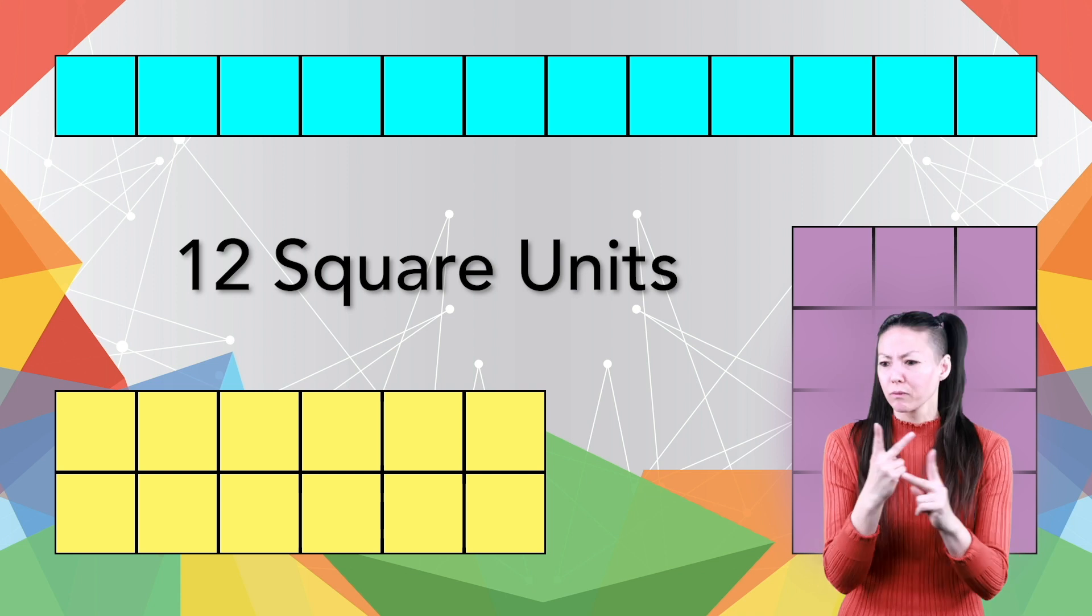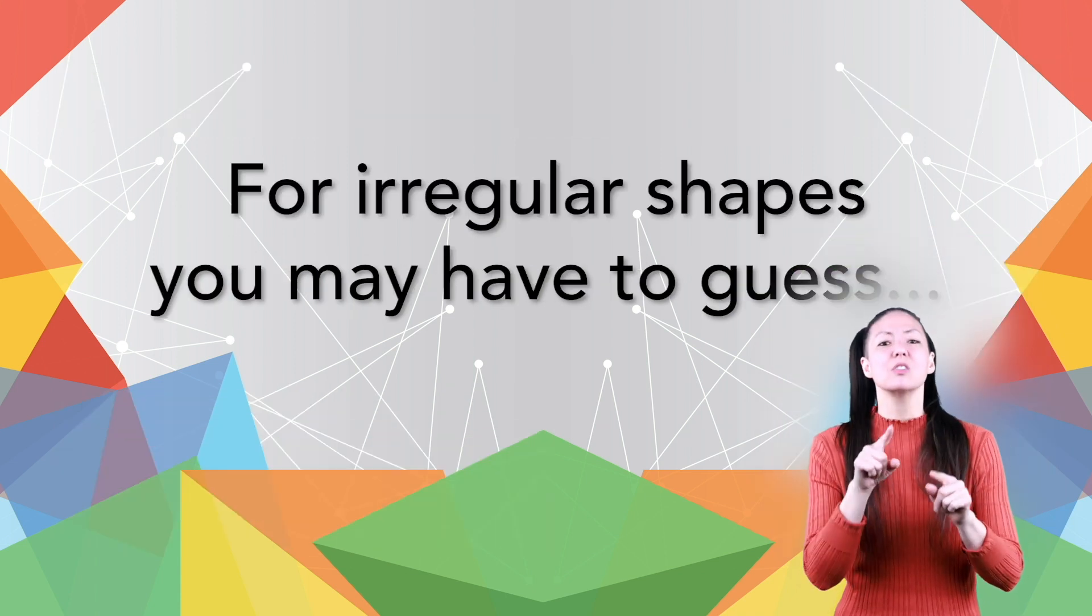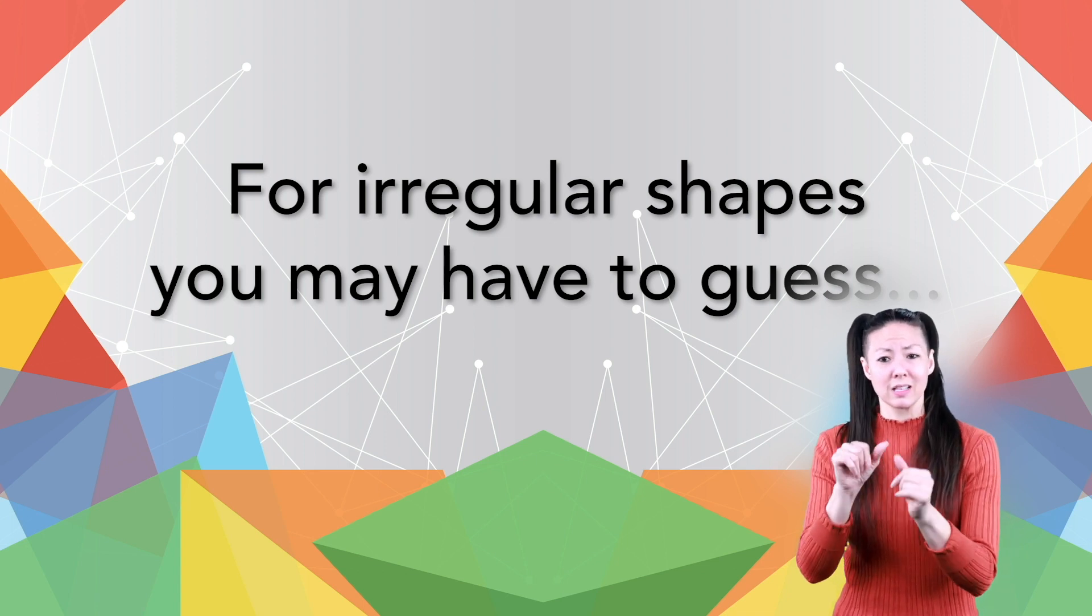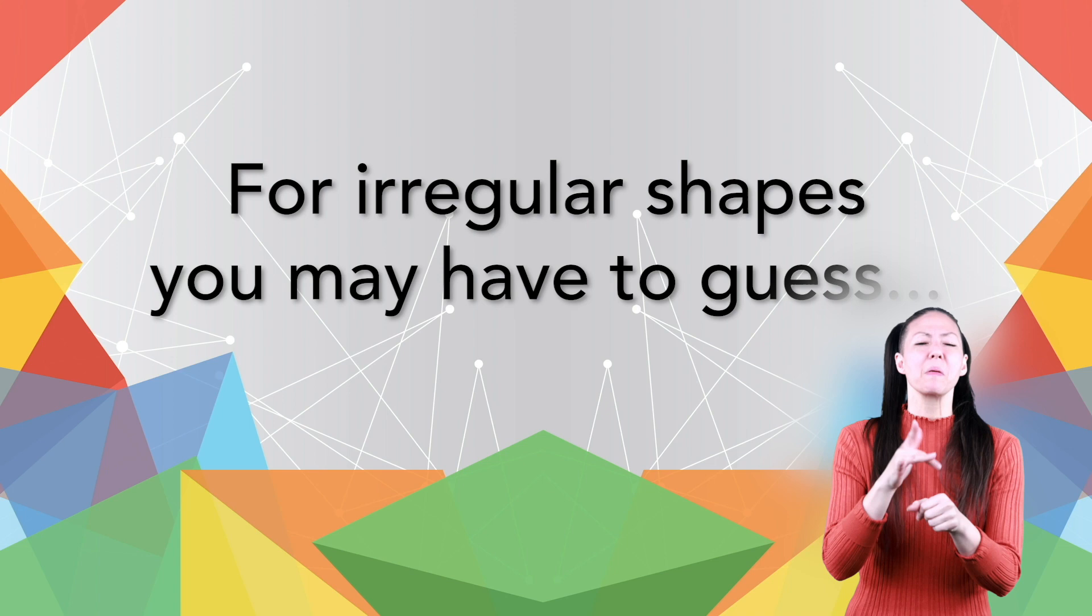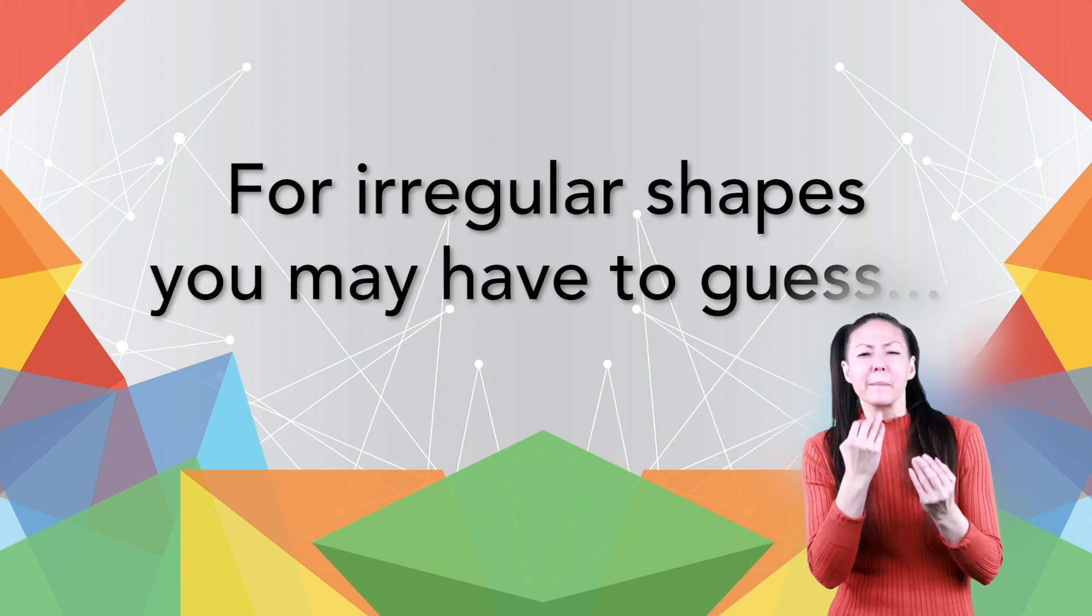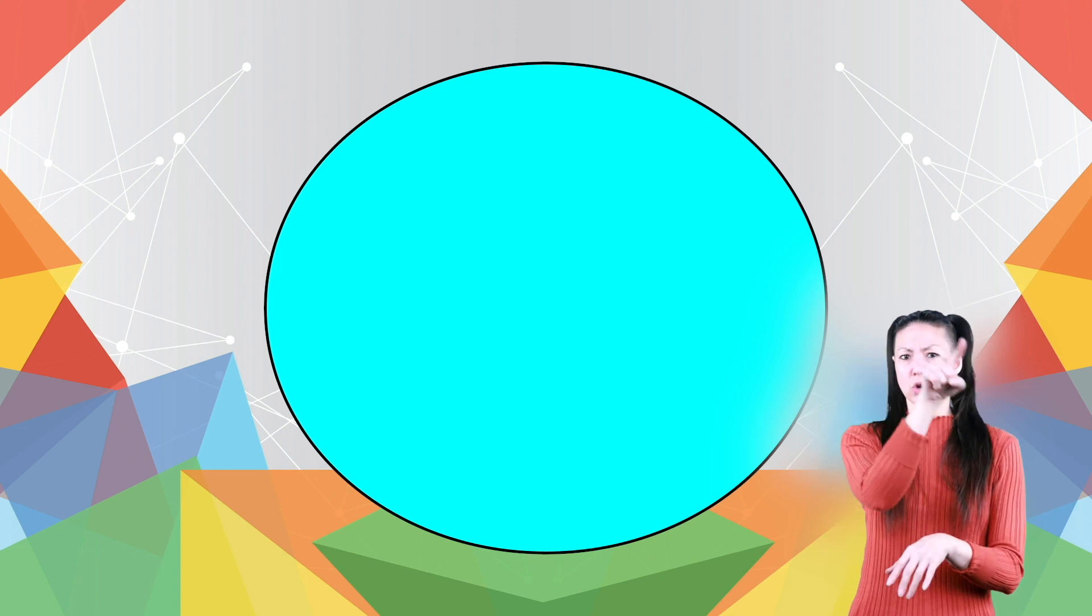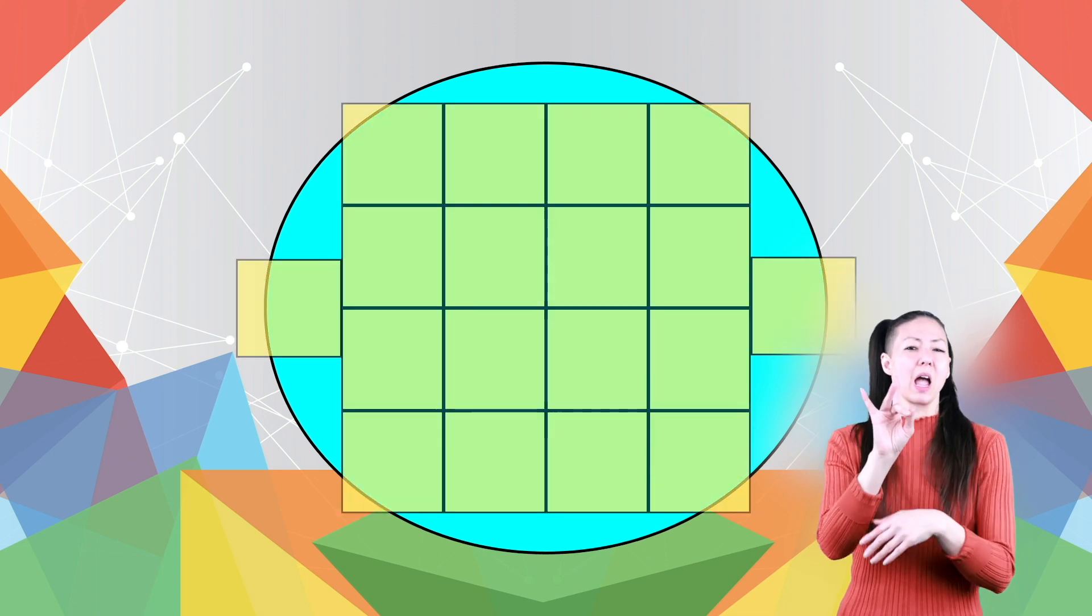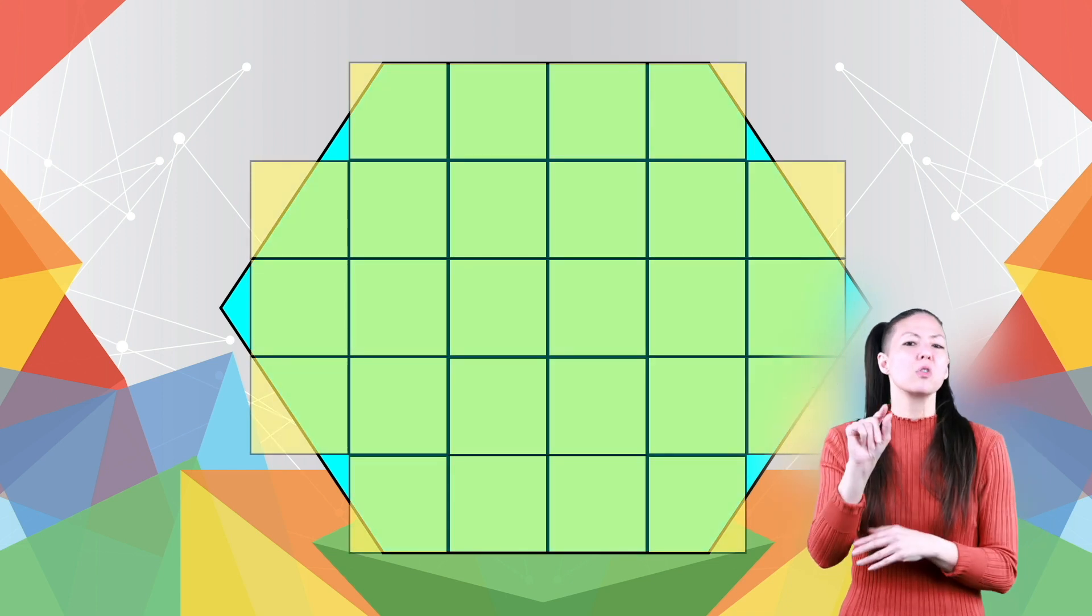For irregular shapes, squares may not match the shape outline exactly. You can still use squares to calculate the area, but you have to approximate or guess how many pieces when put together make a square. See this circle? It's close to 18 square units. And this six-sided figure is about 26 square units, but it's hard to be exact using squares.